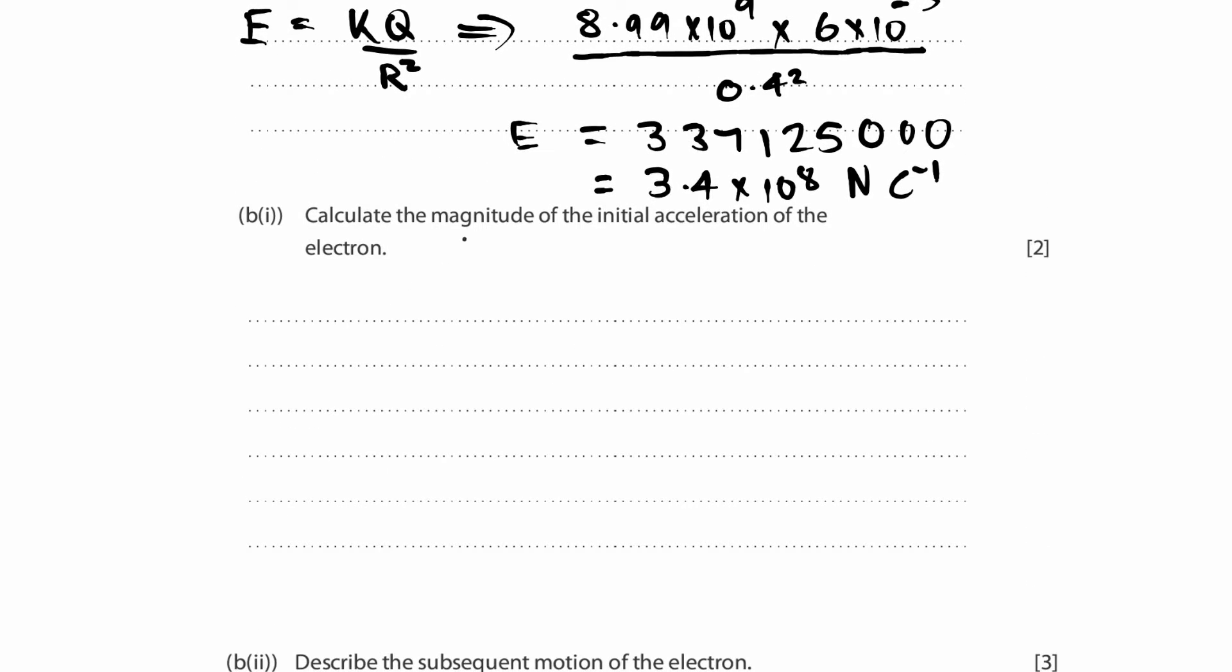The next question: Calculate the magnitude of the initial acceleration of the electron. Now, if you recall, do we have any equation for acceleration in the D section of the data booklet? We don't, do we? We don't have any equation like that. But from remembering back to our Newton's laws of motion, we remember the equation F is equal to ma. This is one of our standard equations of forces. But how can we use this to solve for this question?